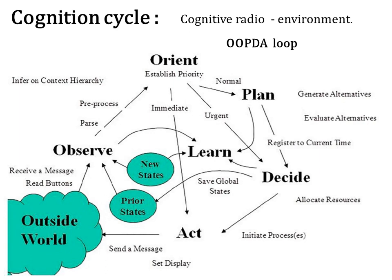A cognition cycle by which a cognitive radio may interact with the environment is illustrated in this figure. Stimuli enter the cognitive radio as interrupts dispatched to the cognition cycle for a response. Such a cognitive radio continuously observes the environment, then orients itself, plans, decides, and then acts. This cycle implements the capabilities required for an ideal cognitive radio in a reactive sequence.